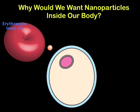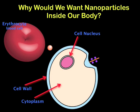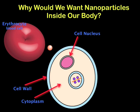Seen below is a schematic of a human cell. It's encased by a cell wall and has a nucleus which contains the genetic material. The inside of the cell is referred to as the cytoplasm. In order for the nanoparticle to deliver its medicine, it must enter the cytoplasm. Once inside, it is able to break up and release the medicine.